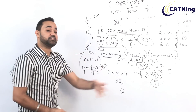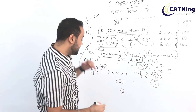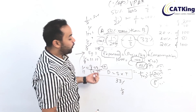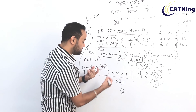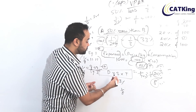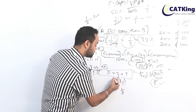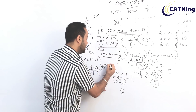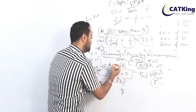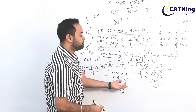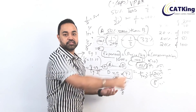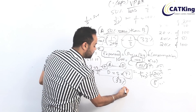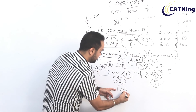Another favorite topic: time, speed, and distance. Suppose a motorcycle's speed increases by 33%. Using the same shortcut: 33% is 1 by 3, so time reduces by 1 by (3+1) = 1 by 4 = 25%. If speed increases by 33%, time to cover the same distance reduces by 25%. This is the shortcut — speed and distance revolve around easy fraction conversions.